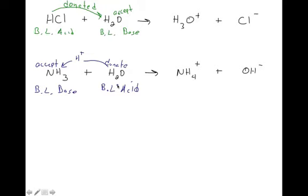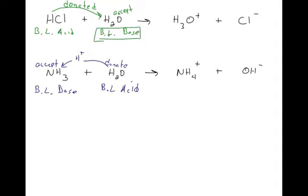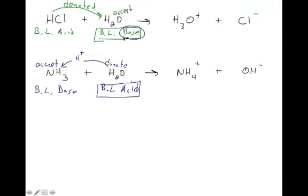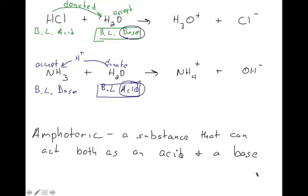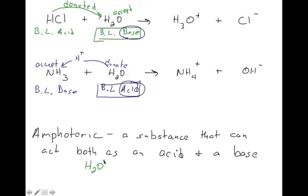This highlights something very important: in the HCl reaction, water is a Bronsted-Lowry base; in the ammonia reaction, water is a Bronsted-Lowry acid. Water acts as both an acid and a base. There's a special term for substances that can do this — amphoteric. Amphoteric means any substance that can act both as an acid and a base. You need to know that water is amphoteric.